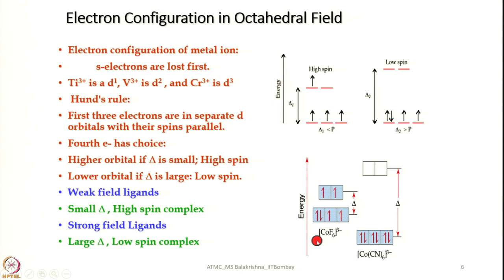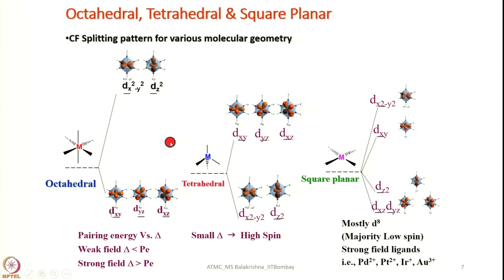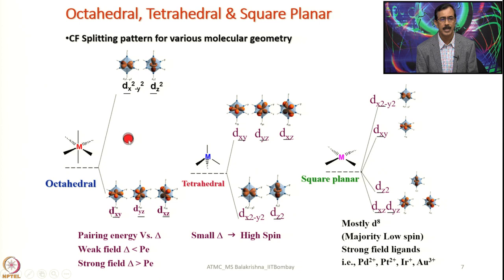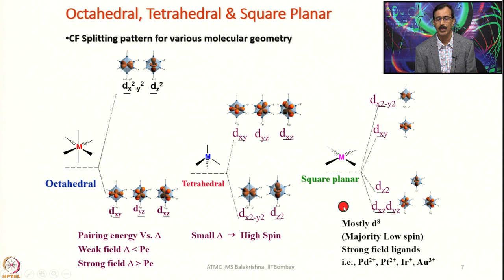This comparison covers three important geometries among coordination complexes. In a typical octahedral complex, the d orbitals split into the eg set and the t2g set. In tetrahedral geometry, exactly the opposite takes place — the e orbitals are lower in energy and t2 orbitals are higher, but the magnitude of splitting is smaller. In the case of square planar geometry, further splitting takes place, and mostly d⁸ complexes are low spin with few exceptions. Examples of square planar geometry include palladium(II), iridium(I), gold(III), and rhodium(I), which mostly possess square planar geometry.